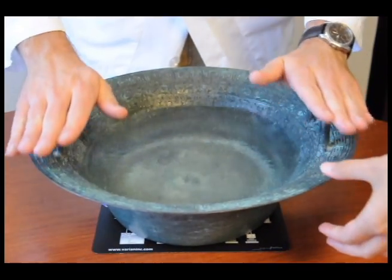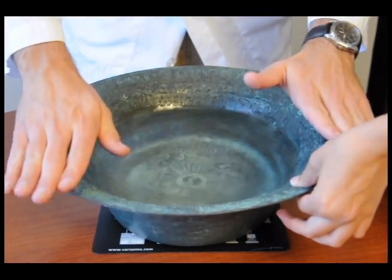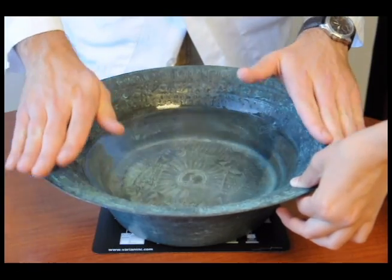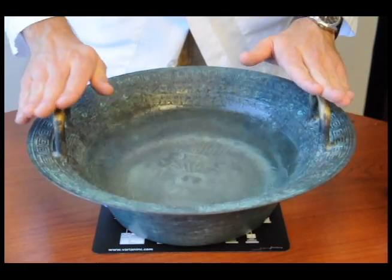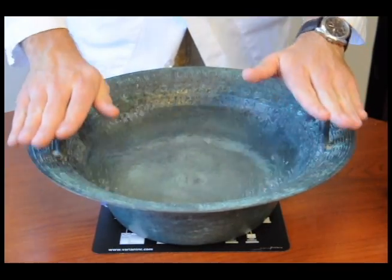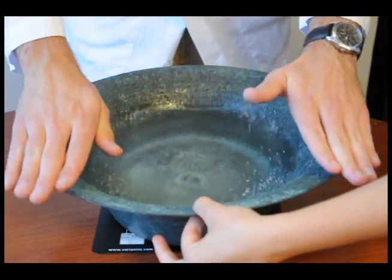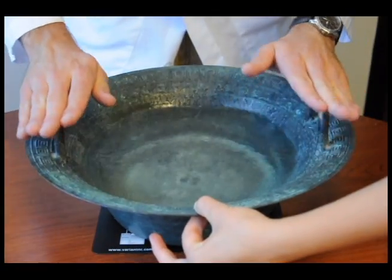When you grab the bowl at the constructive spots, the water stops jumping because the bowl stops vibrating. So when you grab the bowl at the destructive points, the water continues to vibrate. This is because the bowl does not vibrate at the destructive points.